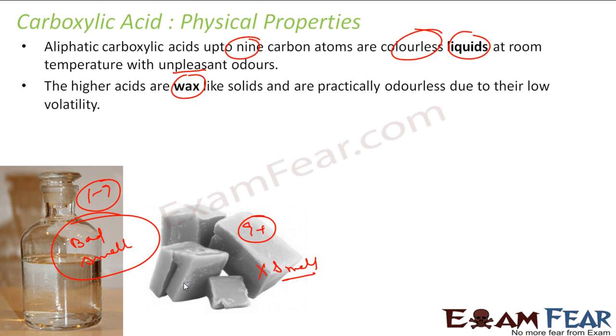Why no smell? Because the higher acids are low volatile. The lower ones (up to 9 carbons) are high volatile, which is why they have a bad smell.